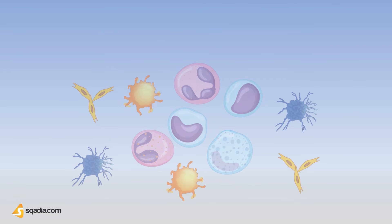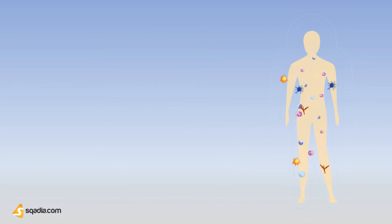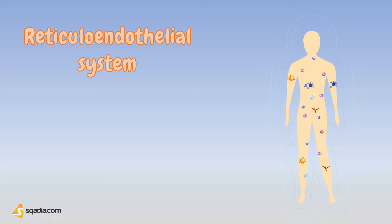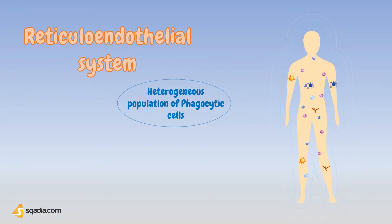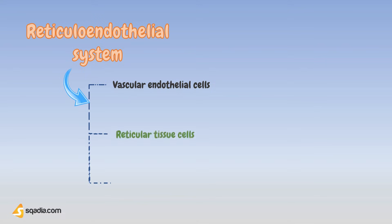There are many cells that undergo the process of phagocytosis, and all these cells are called phagocytes or phagocytic cells. The main focus of this video lecture will be different phagocytic cell types. The body-wide system of phagocytic cells that mainly phagocytize foreign particles is known as the reticuloendothelial system, RES. The reticuloendothelial system is a heterogeneous population of phagocytic cells that play an important role in the clearance of particles and soluble substances in the circulation and tissues, and forms part of the immune system. RES consists of the vascular endothelium and reticular tissue cells, and phagocytes — mainly various types of macrophages — with routine functions that include clearing up the body's own debris and killing and digesting bacteria.